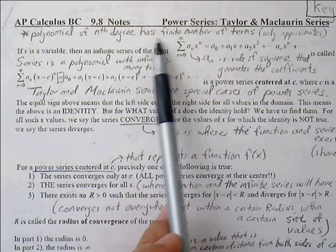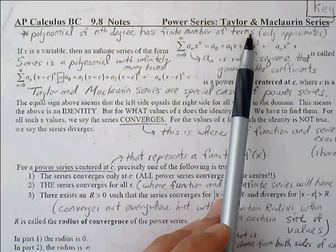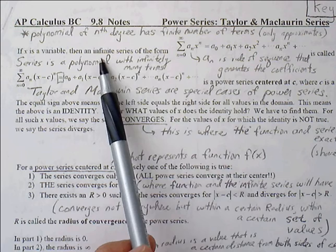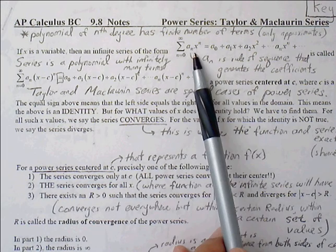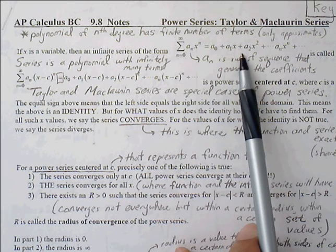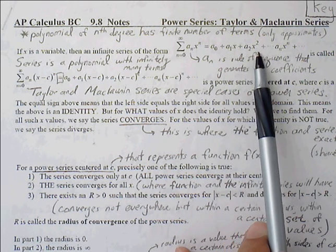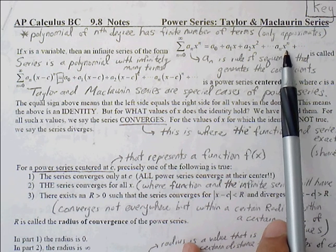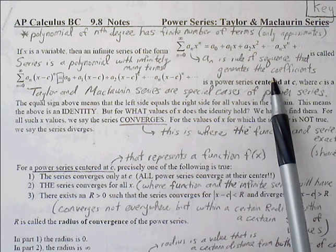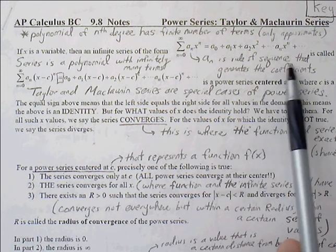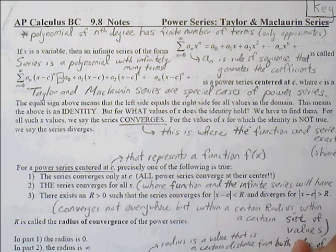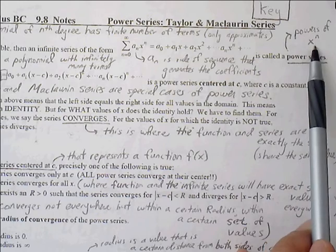Let's look at notes for 9.8: power series, Taylor and Maclaurin series. If x is a variable, then an infinite series will have the form: a sub n x to the n, which equals a sub 0 plus a sub 1 x plus a sub 2 x squared, and so on until a sub n x to the n. The coefficients are generated by a rule of sequence a sub n, and we call this a power series because we're dealing with powers of x to the n.